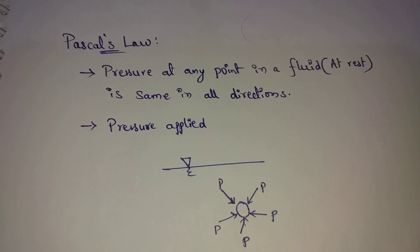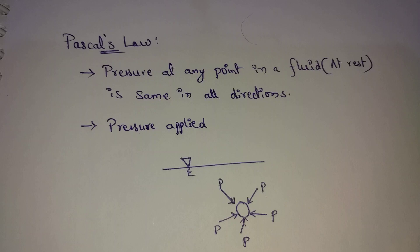Pressure is equal to normal force per unit area — force divided by area. We use Newton per meter square. Pressure is a scalar quantity, meaning it has magnitude but no specific direction.